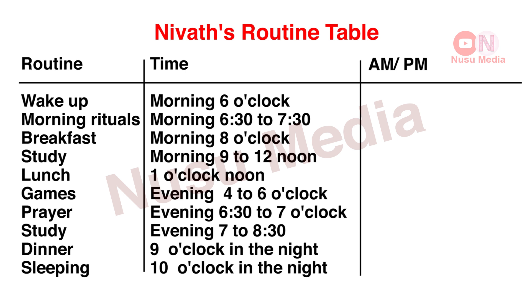At the table, we have three columns. The first column is routine, the second column is time, and the third column is a.m. or p.m.